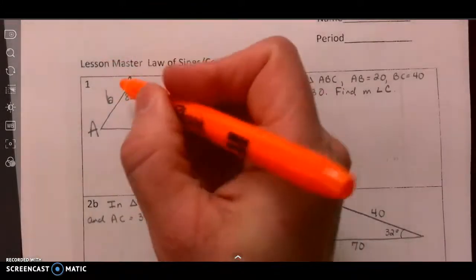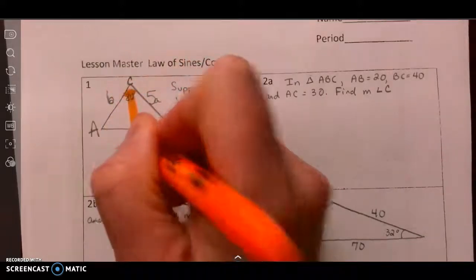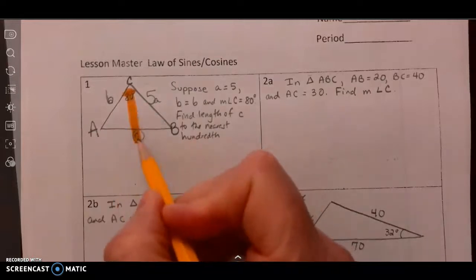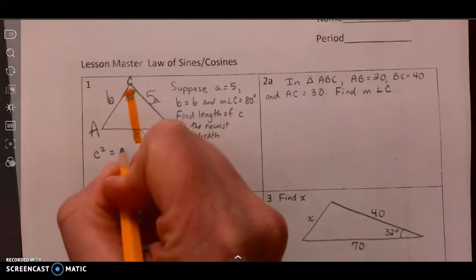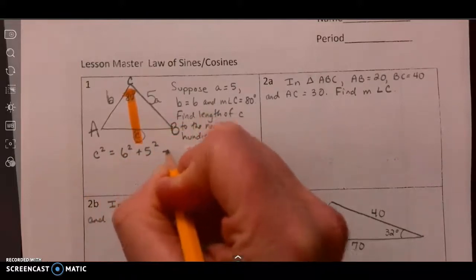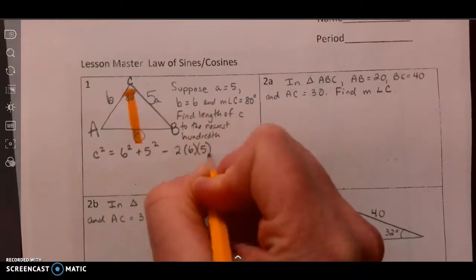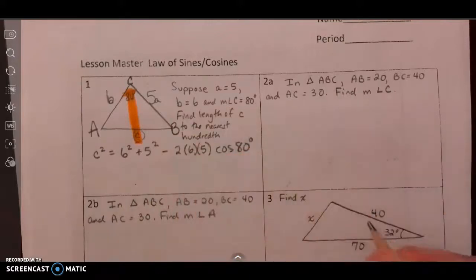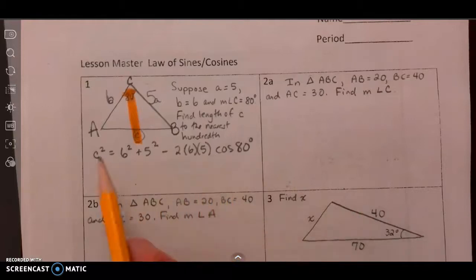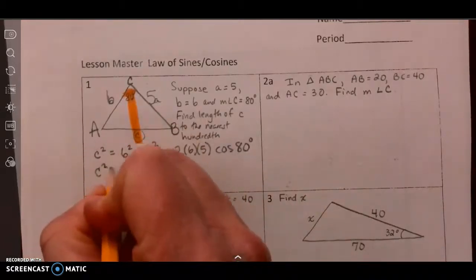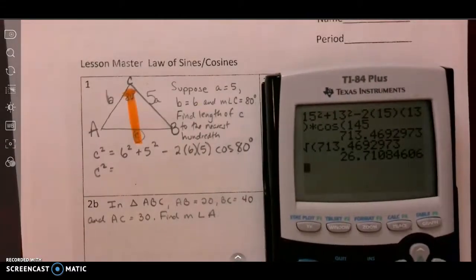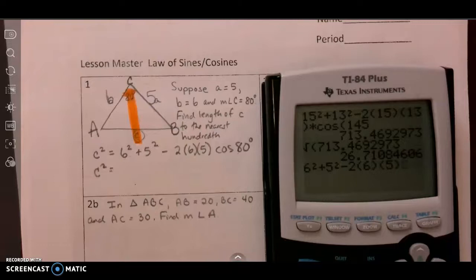I'm going to highlight the angle that I have and the side across from it, so that when I use Law of Cosines I make sure this is my side squared and this is my cosine of the angle. So I've got C squared equals 6 squared plus 5 squared minus 2 times 6 times 5 times the cosine of 80 degrees. This is very similar to the example we had just done. I know everything here, so I can put all of this in my calculator because my calculator knows order of operations: 6 squared plus 5 squared minus 2 times 6 times 5 times the cosine of 80.